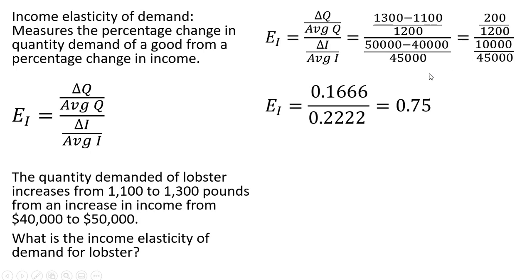So 200 divided by 1,200 is 0.1666. And 10,000 divided by 45,000 is 0.222. And this will simplify down to 0.75 for income elasticity of demand for lobster.